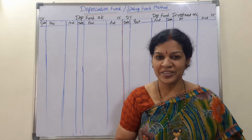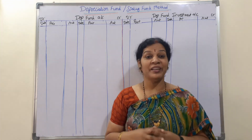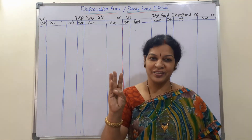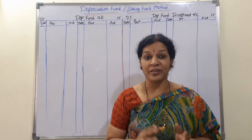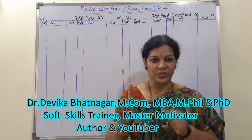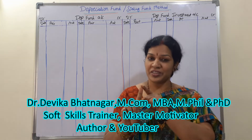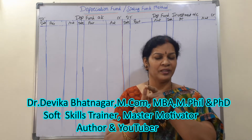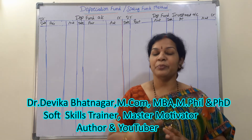Hello dear students, welcome to Devika's Commerce and Management Academy. We are discussing the depreciation chapter - the last concept, the last method, which is the depreciation fund method or sinking fund method. Three methods we have already discussed: straight line method, diminishing balance method, and annuity method. The fourth one is depreciation fund or sinking fund method.